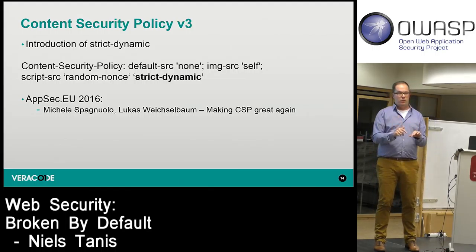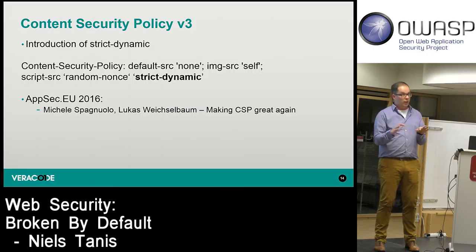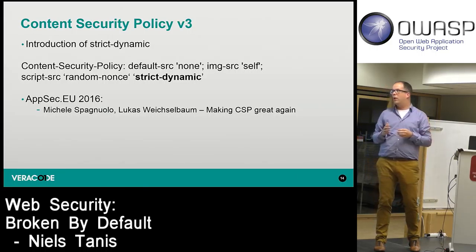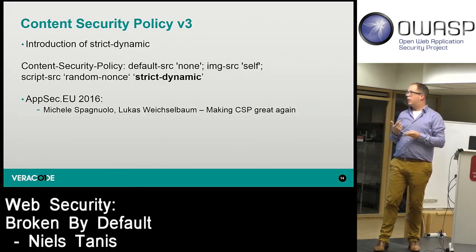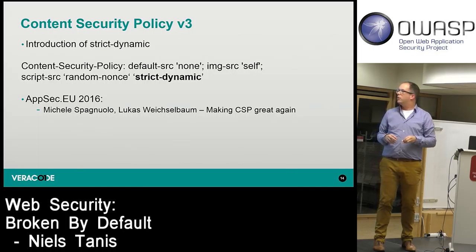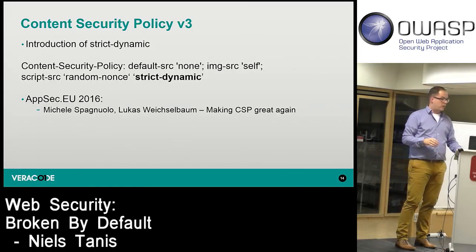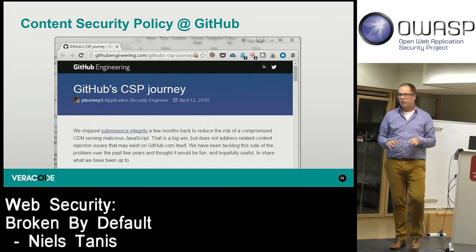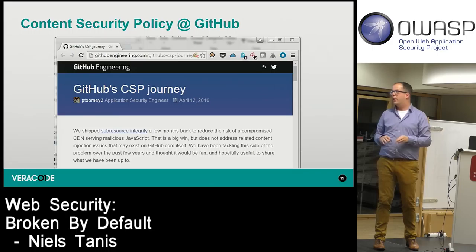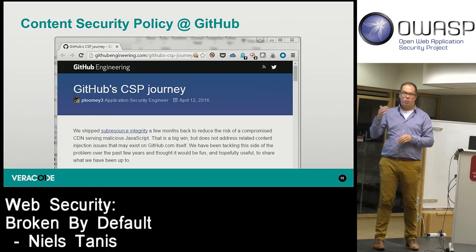The researchers showed that strict-dynamic makes CSP policies significantly more workable. I encourage you to watch their presentation on YouTube — they explain how CSP was created, evolved into version 2, and how they propose version 3 as the way forward. Once again, this is a mitigating control — it reduces the risk of XSS but won't eliminate it completely. GitHub also has a great blog post series on how they implemented CSP.